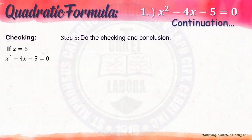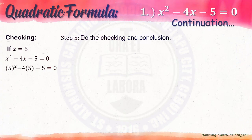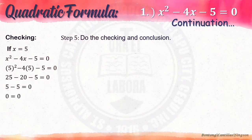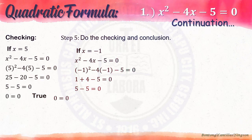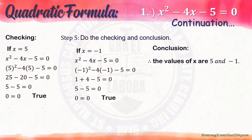Checking: if x is 5, substitute into the given equation. You get 5 squared minus 4 times 5 minus 5 equals 0. Using PEMDAS: 25 minus 20 minus 5 equals 0, which gives 0 equals 0 — true. For x equals negative 1: negative 1 squared minus 4 times negative 1 minus 5. That gives 1 plus 4 minus 5, which equals 0 — also true. Conclusion: therefore, the values of x are 5 and negative 1.